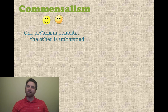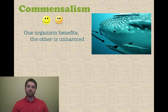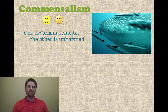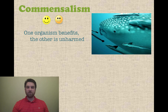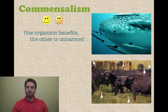Commensalism is where one organism benefits and the other one is unharmed — it neither gets a benefit nor does anything bad happen to it. A good example is a whale shark and remoras, the little hanger-on fish you sometimes see on sharks. They get to eat algae and things building up on the skin of the shark, but it doesn't really hurt or help the shark. It just sort of doesn't really mind. Another example is ospreys and water buffalo — the buffalo don't really mind, but the birds get a benefit.